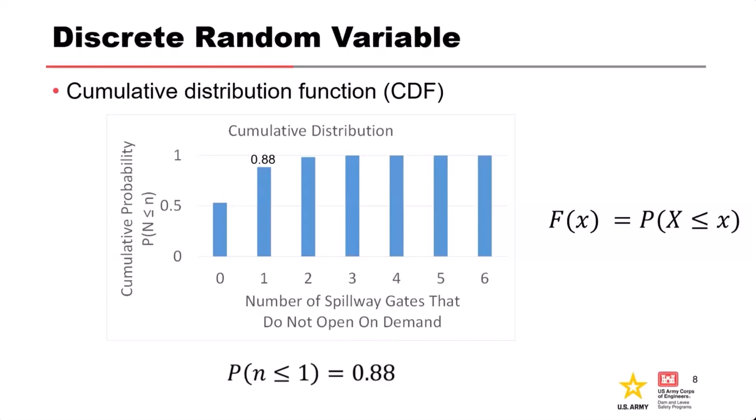The other way to define distributions for discrete random variables is with the cumulative distribution function, which defines the probability of less than or equal to a value. This is the same distribution plotted cumulatively, where the vertical axis gives the probability that the number of non-opening spillway gates is less than or equal to a particular value. For example, P(n ≤ 1) is 0.88 from this plot.